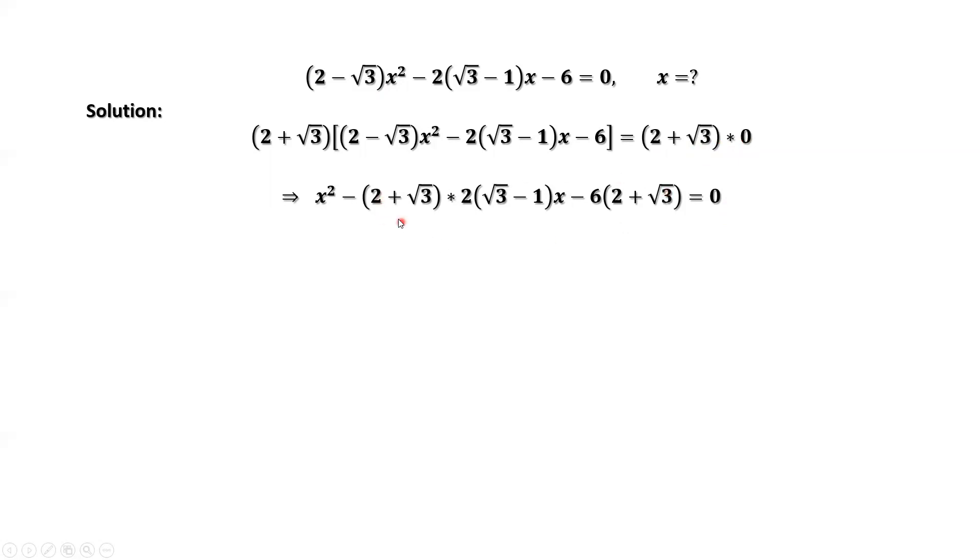This is a quadratic equation. Now let's continue to simplify. Here we have the constants a = 1, b = -2(1 + √3), c = -6(2 + √3). We can use the quadratic formula to find the solution of this quadratic equation.